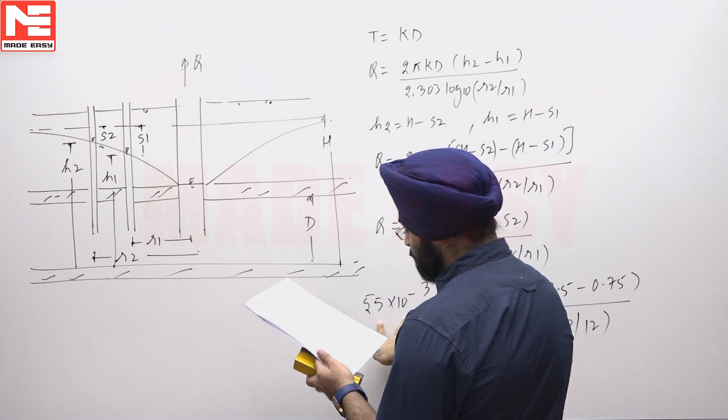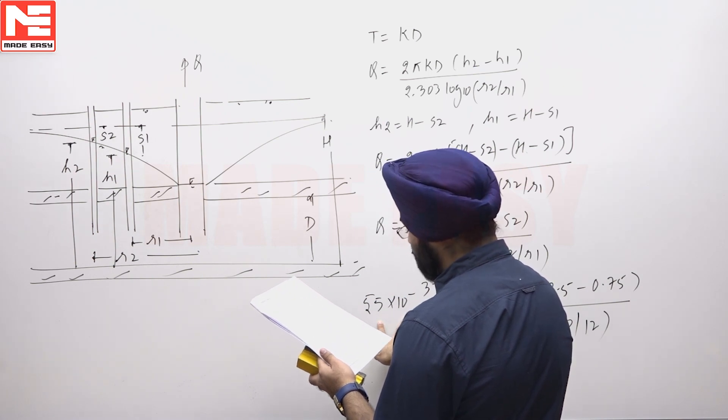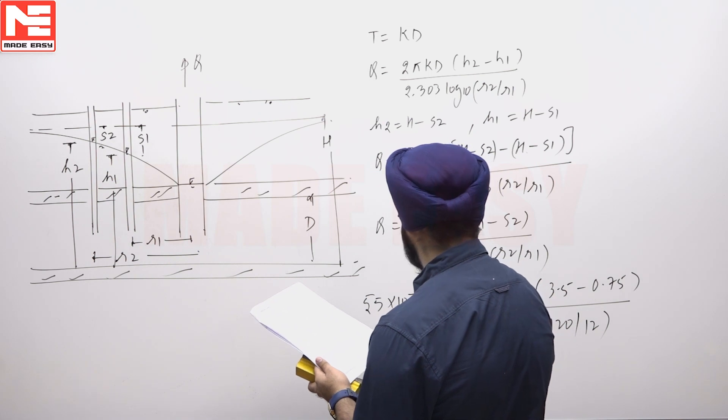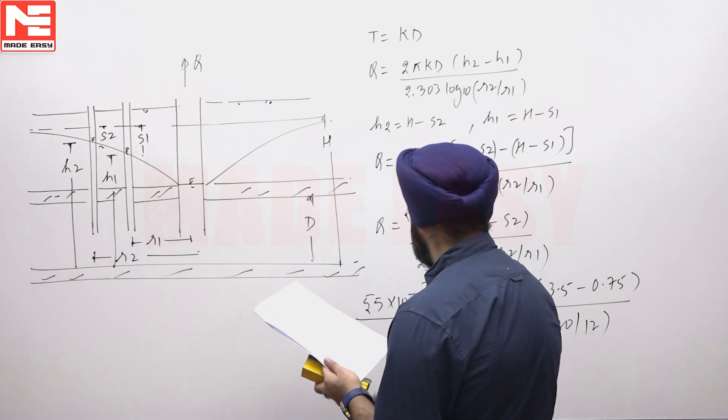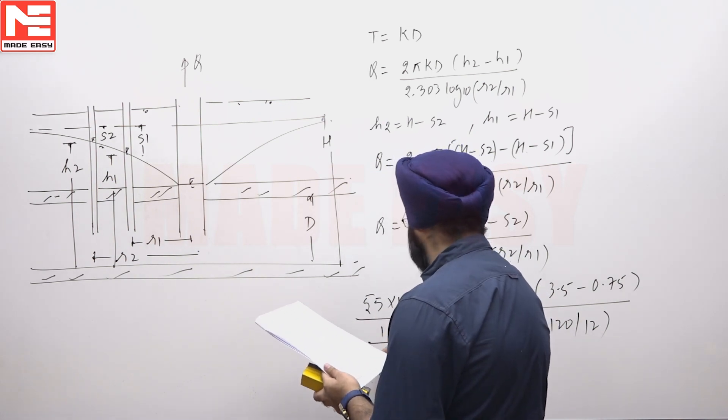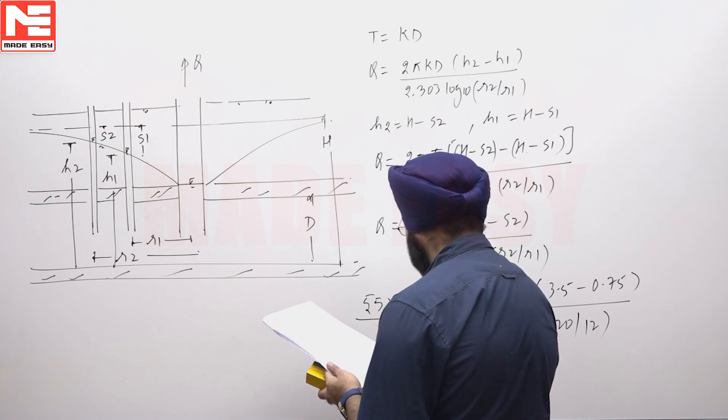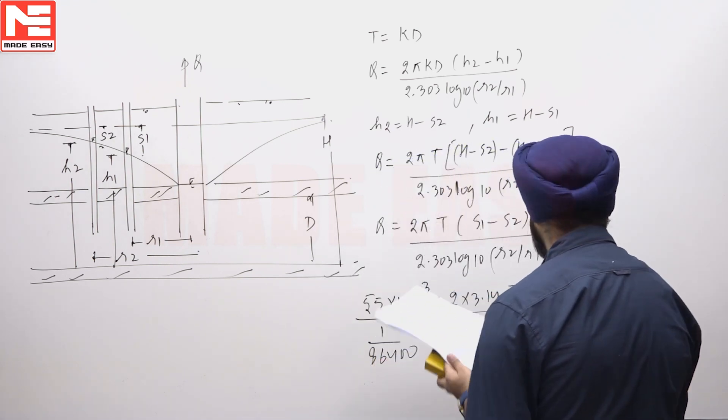We have to calculate the transmissibility in meter square per day. This is meter cube per second, to be converted into days, divided by 86400.